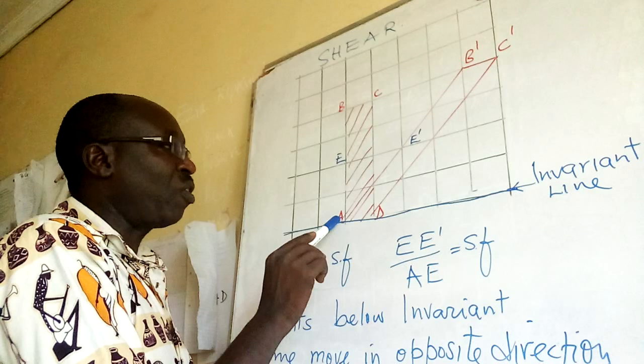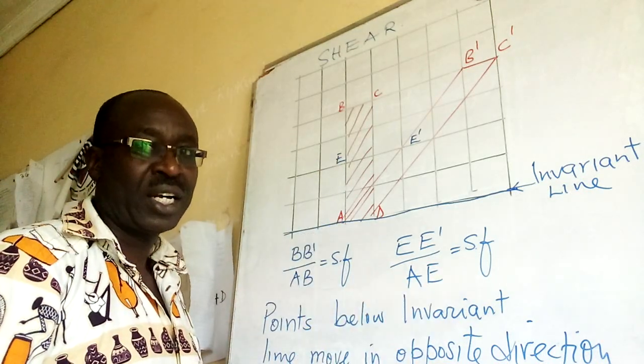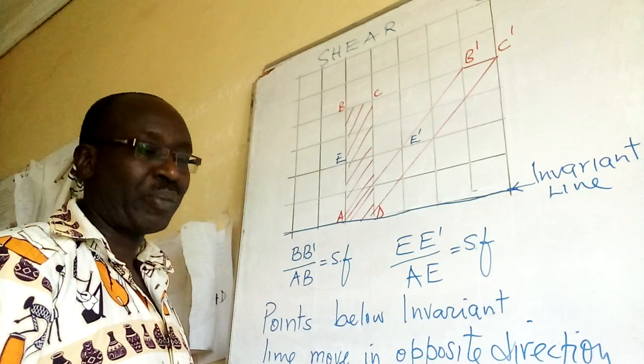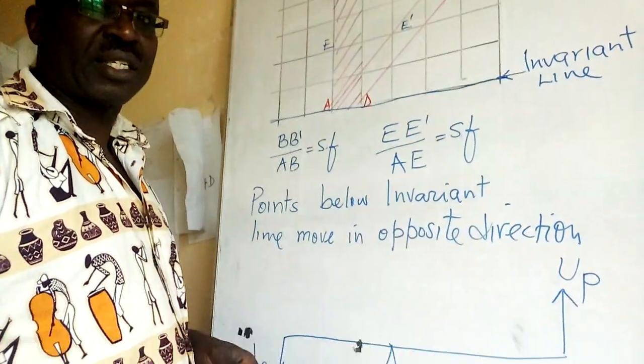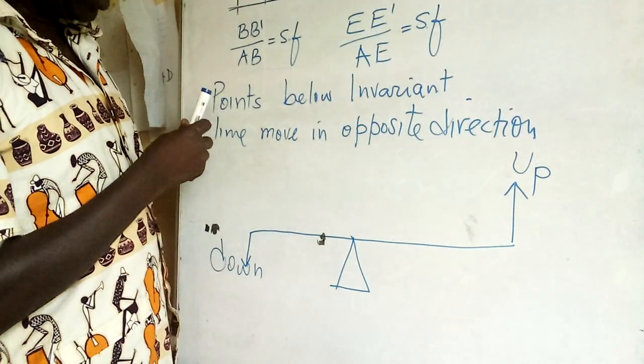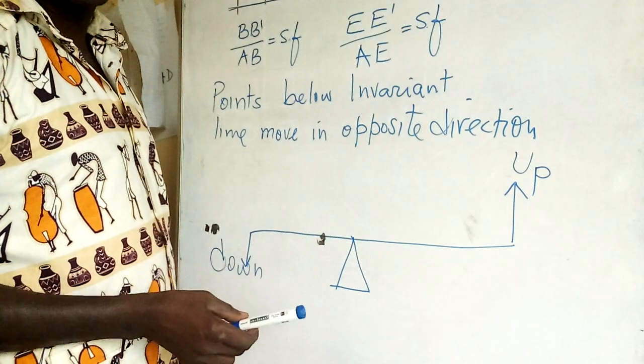...the height, how far E is from the invariant line, you get scale factor. Those two are very important points. Now what next must we know? That points below invariant line move in the opposite direction.